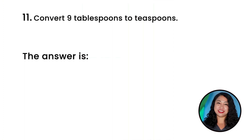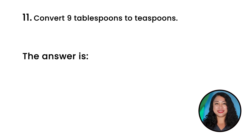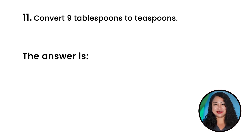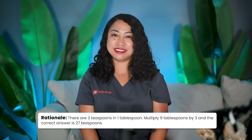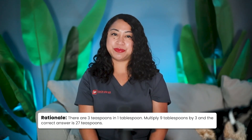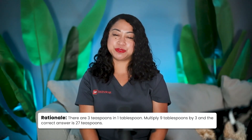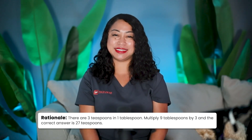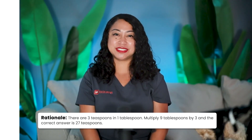Question 11: Convert 9 tablespoons to teaspoons. The correct answer is 27 teaspoons. Rationale: there are 3 teaspoons in one tablespoon. Multiply 9 tablespoons by 3 to get 27 teaspoons.